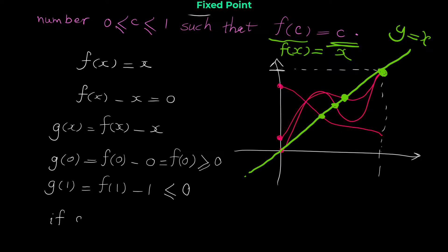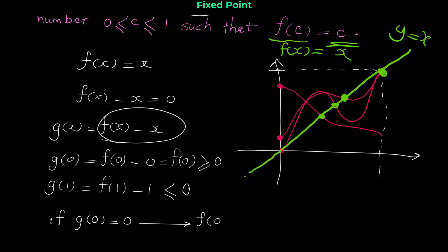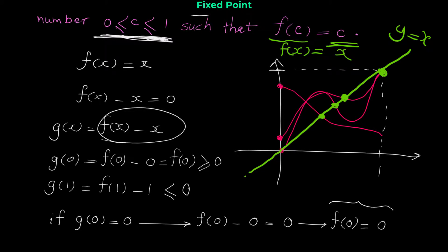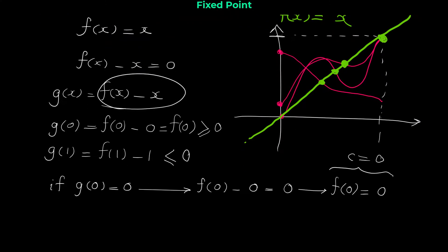Case 1: suppose g(0) = 0. That means f(0) − 0 = 0, so f(0) = 0. We wanted to find a number c with 0 ≤ c ≤ 1 such that f(c) = c. Here we conclude that c = 0 works.